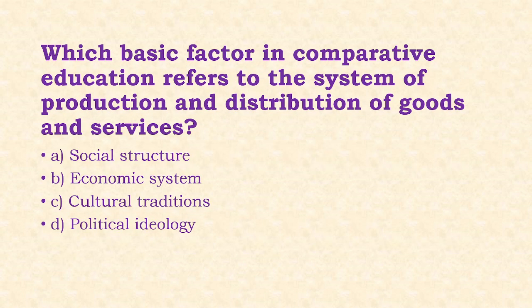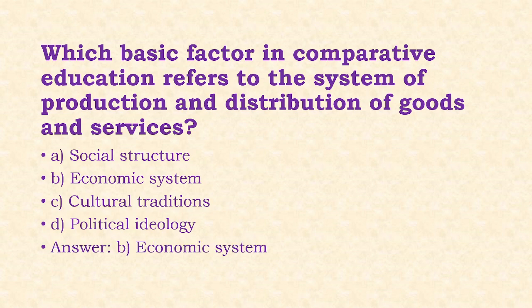Next: Which basic factor in comparative education refers to the system of production and distribution of goods and services? Options: social structure, economic system, cultural traditions, political ideology. The answer is option B, that is economic system.